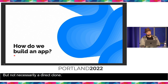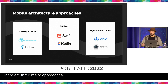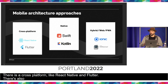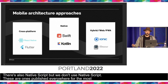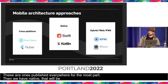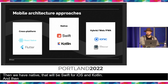How do we build apps at Phase 2? There are three main approaches. First, cross-platform frameworks like React Native and Flutter — these are write-once, publish-everywhere for the most part. Second, Native: Swift for iOS, Kotlin for Android, and BrightScript for Roku. Third, hybrid web and PWA, with frameworks like Ionic and Cordova.